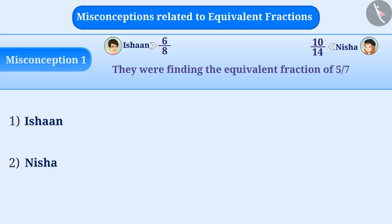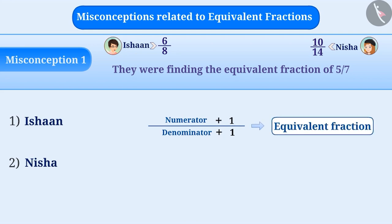Sometimes, there is a misconception that adding the same number to the numerator and the denominator of a fraction gives its equivalent fraction. In this way, Ishan had definitely added 1 to the numerator and the denominator of 5/7. Therefore, he got fraction 6/8, which is incorrect. So, option 1 is the wrong answer.